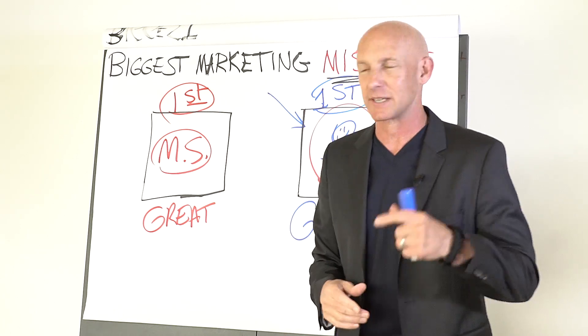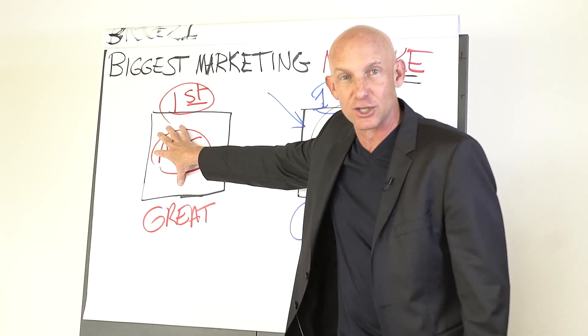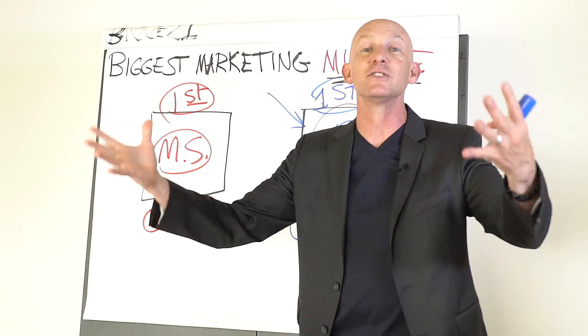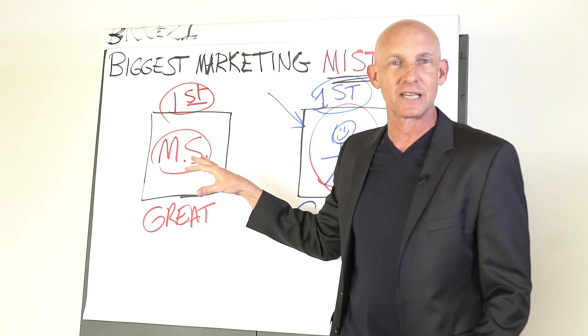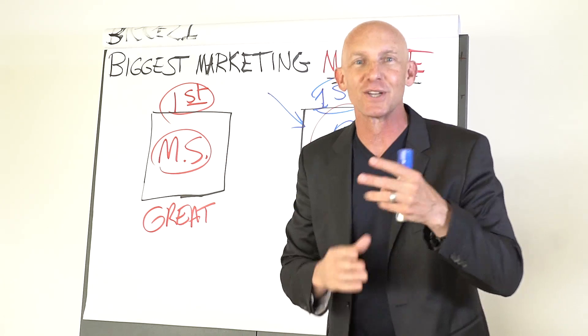The biggest mistake real estate agents make is they focus on the marketing strategy and then they get tons of prospects or tons of leads and they need tons of leads. They need 1500 leads a month to convert because they don't know what they're doing.